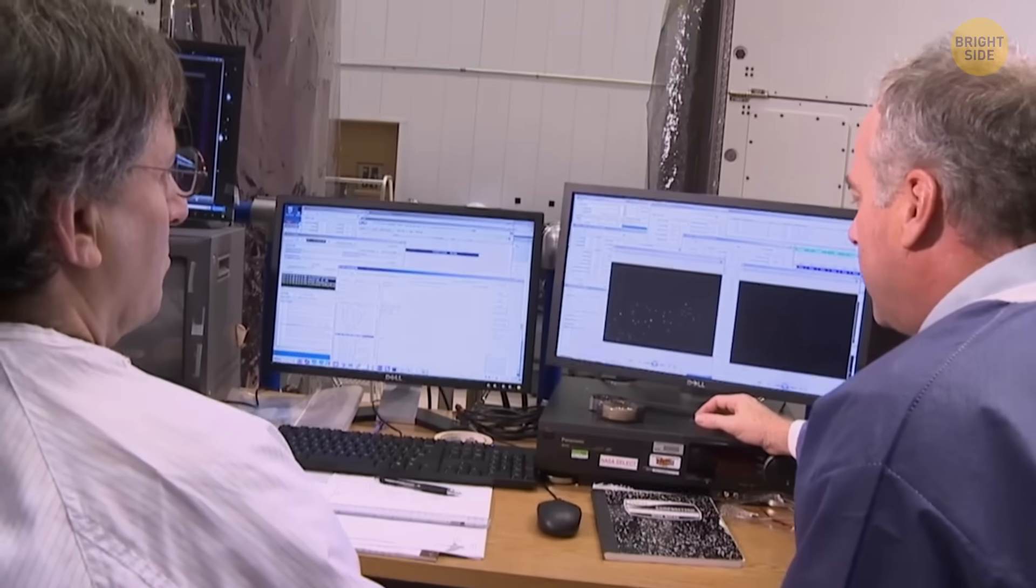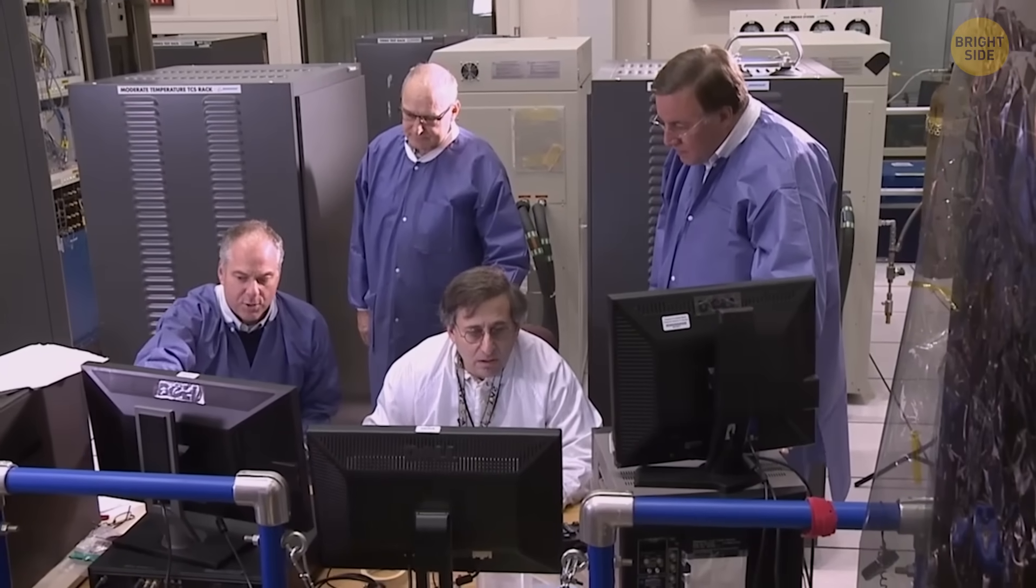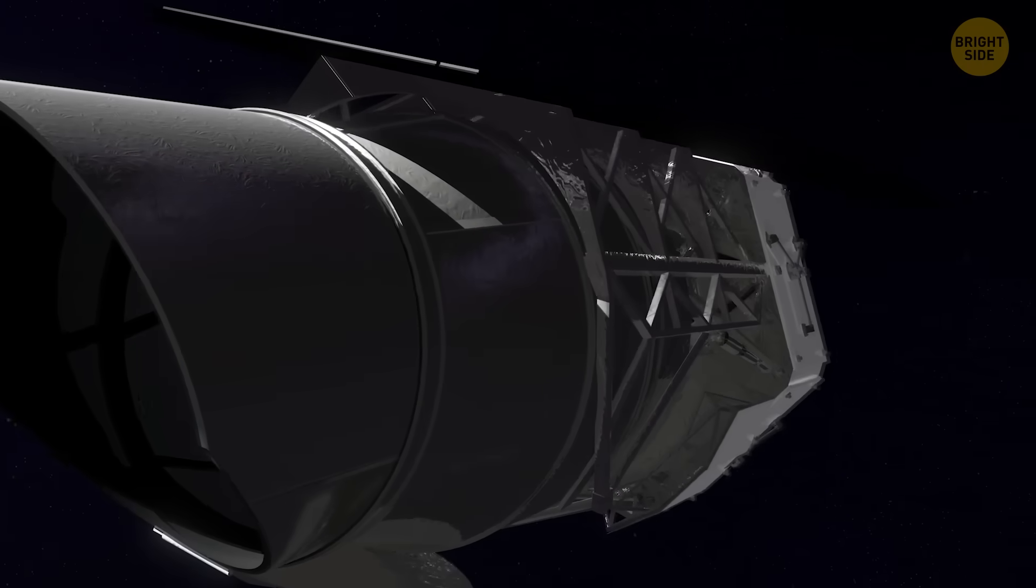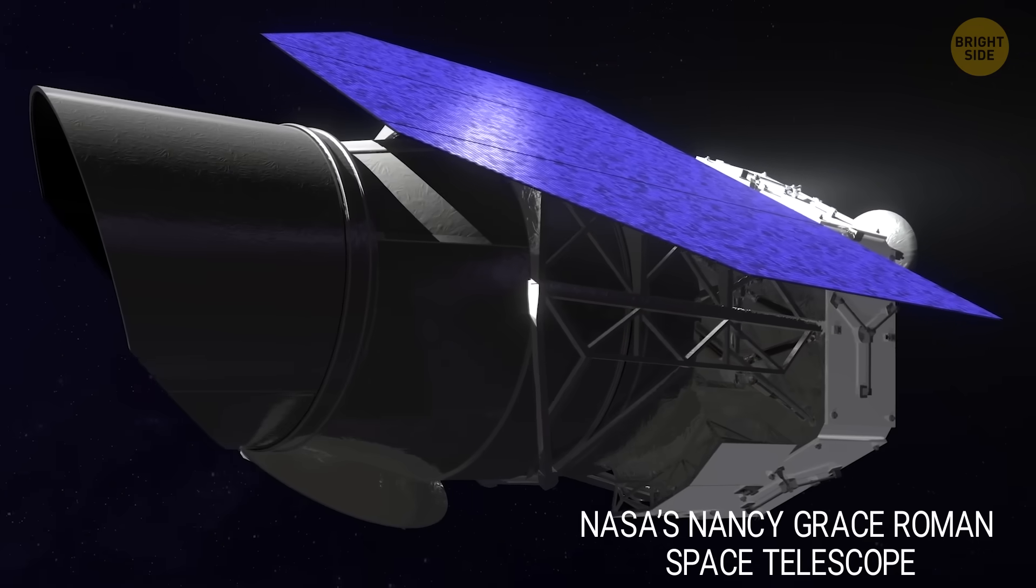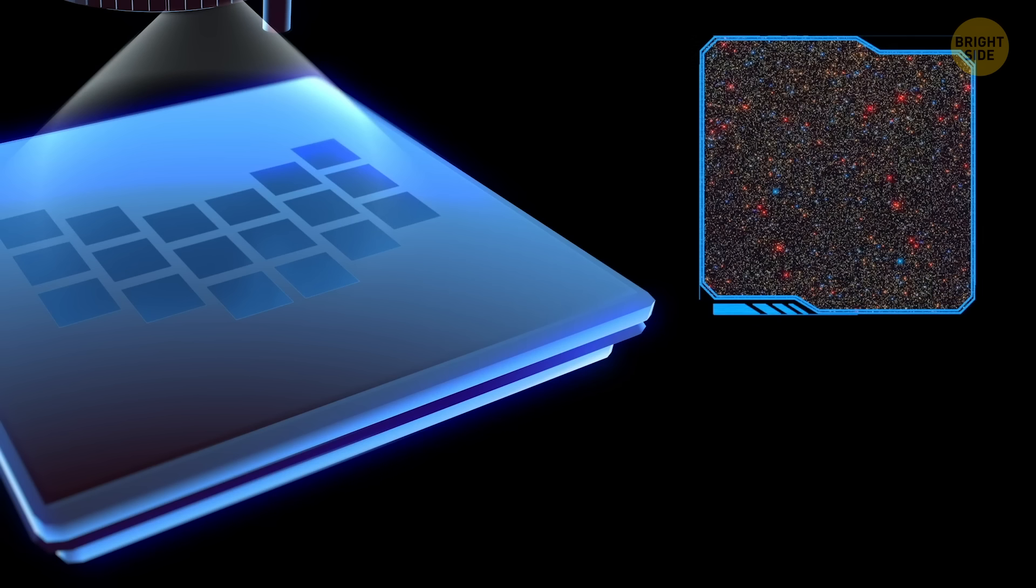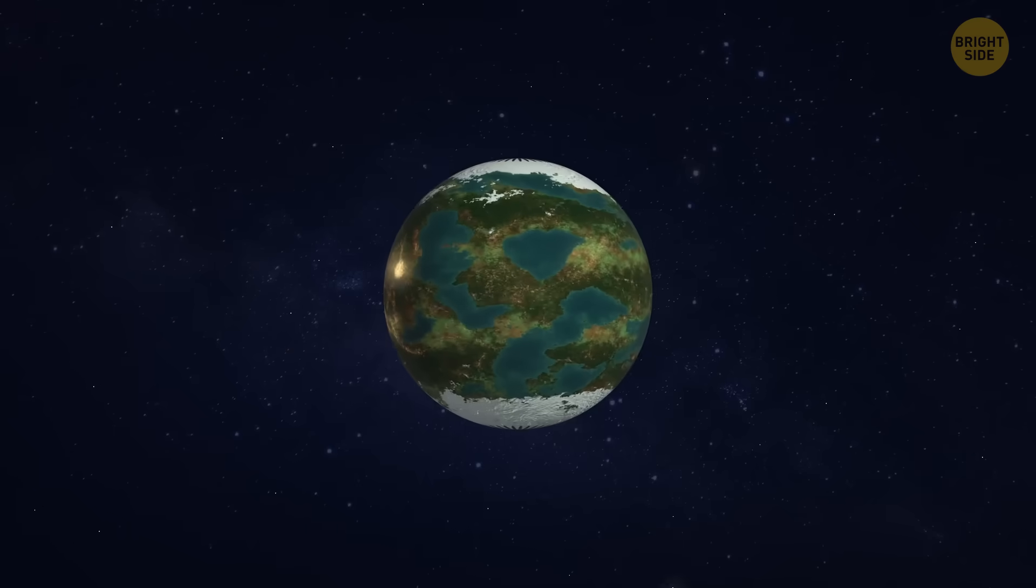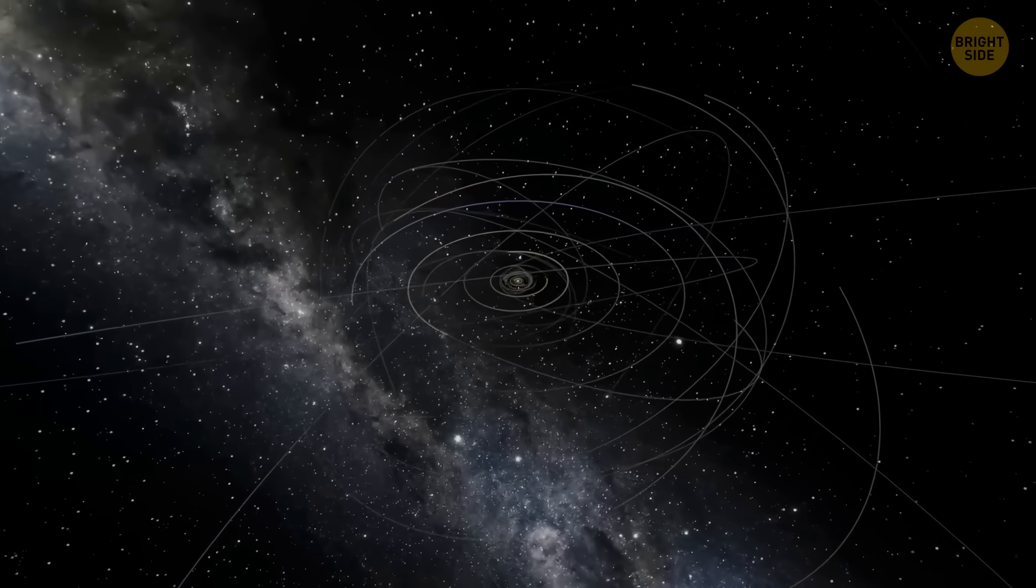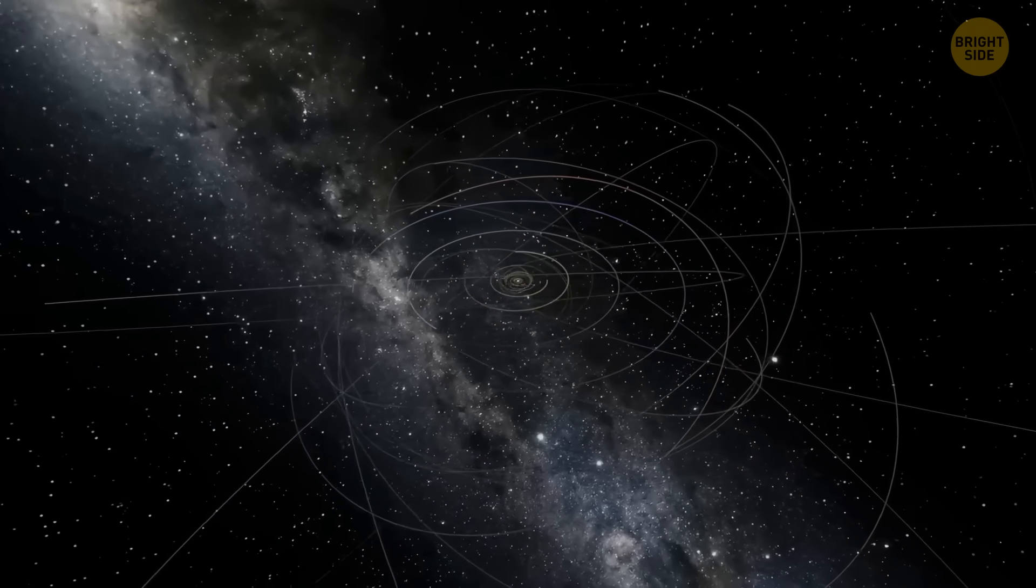Whether this really turns out to be the Planet 9 discovery or not, only time will tell. For now, its existence is still up for debate. But with powerful new technology on the way, like NASA's Nancy Grace Roman Space Telescope, astronomers are more determined than ever to uncover the truth. And if Planet 9 really is out there, hiding in the cold dark edges of our solar system, it's running out of places to hide.